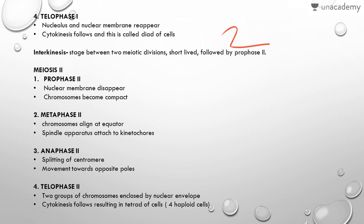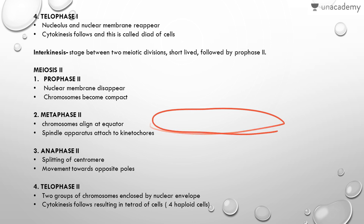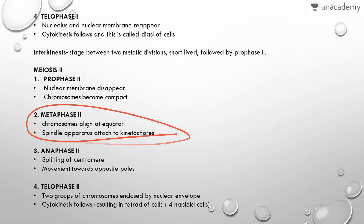Interkinesis is the stage between the two meiotic divisions; it is short-lived and is followed by prophase II. Meiosis II is again divided into four phases: prophase II, metaphase II, anaphase II, and telophase II. In prophase II, the nuclear membrane disappears and chromosomes become compact. In metaphase II, chromosomes align at the equator forming a metaphasic plate-like structure, and the spindle apparatus attaches to kinetochores. In anaphase II, the centromere splits and chromosomes move towards the opposite poles. In telophase II, two groups of chromosomes are enclosed by the nuclear envelope, and cytokinesis follows.